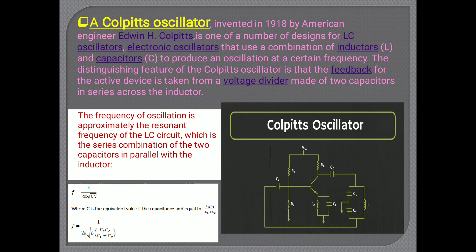The second type is the Colpitts oscillator. Invented in 1918 by American engineer Edwin H. Colpitts, it is one of a number of designs for an LC oscillator — designed using L (inductor) and C (capacitor) components. Electronic oscillators that use a combination of inductors and capacitors to produce an oscillation at a certain frequency are called Colpitts oscillators. The distinguishing feature is that the feedback for the active device is taken from a voltage divider made up of two capacitors in series across the inductor.